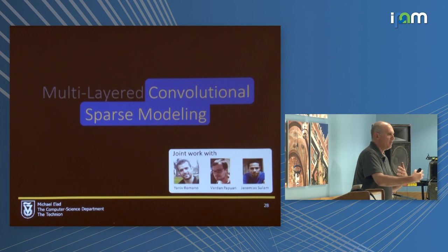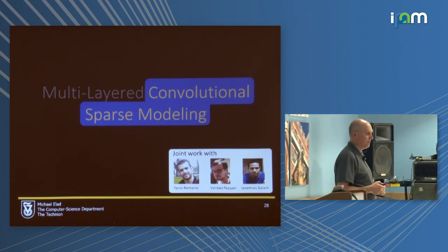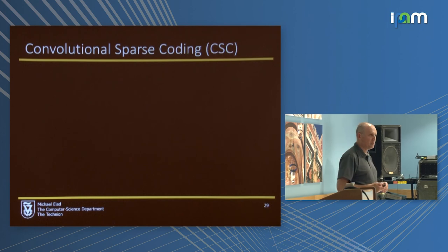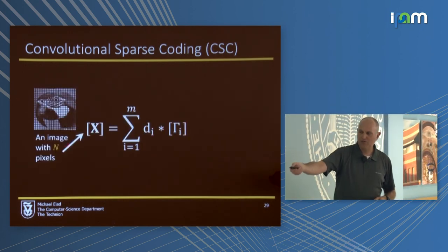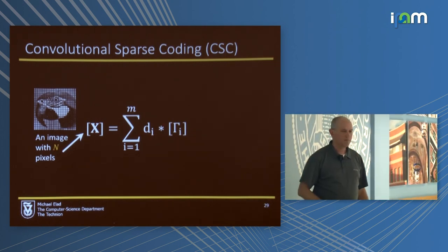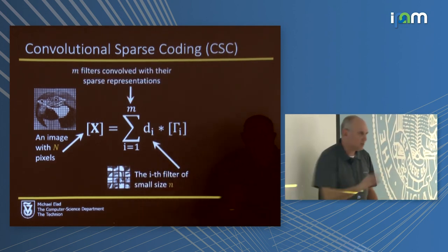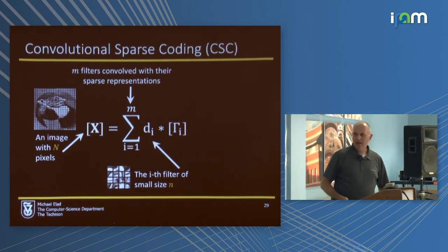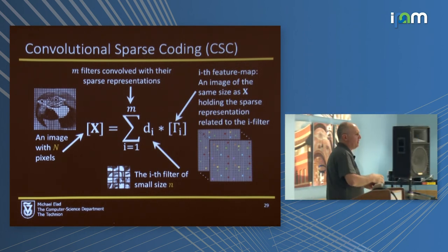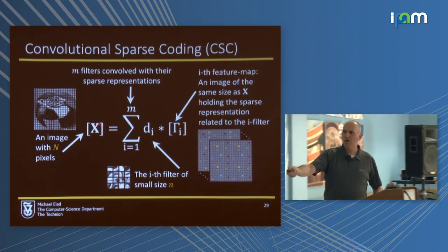Up to now it was all general story — years of work by many. What I'll do now is turn to results accumulated in the past two years, created by Yaniv Romano, Vardan Papyan, and Jeremias Sulam, my three PhD students — now ex-PhD students, all graduated. Convolutional sparse coding: your image of length capital N, stretched into one vector, is basically the sum of convolutions. Those convolutions are built of small filters — in this case M=16 filters, each 7×7. Those convolve sparse maps, each of the same size as the image.